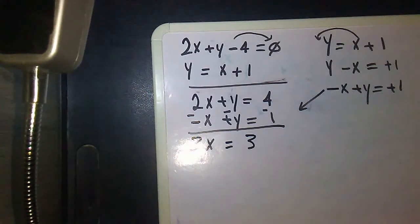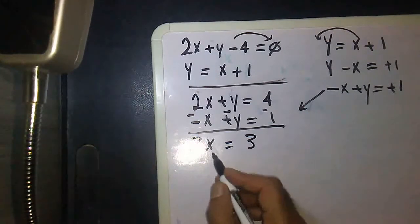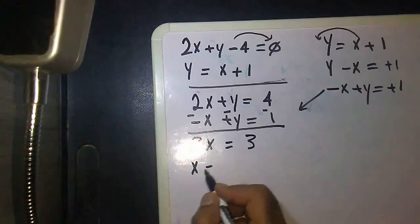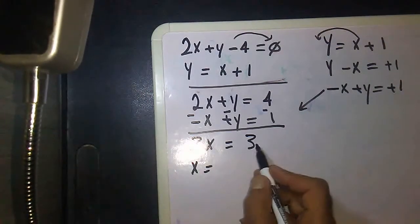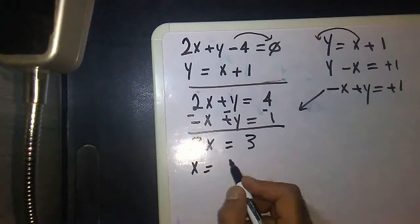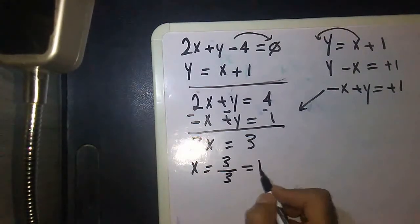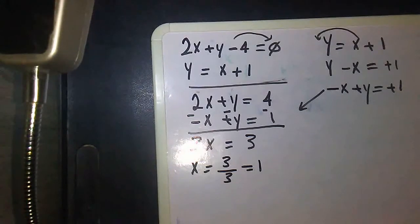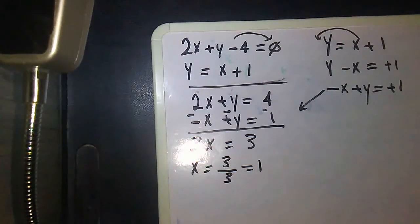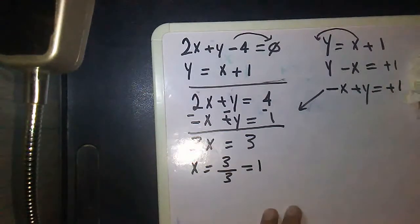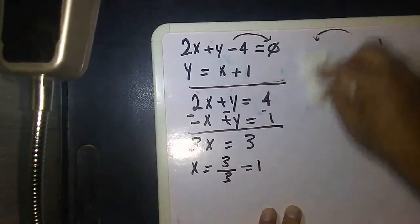So 3x equals 3. I want the value of x only. Then x equals 3 divided by 3, which equals 1. I got the value of x. Now it's time for me to get the value of y.